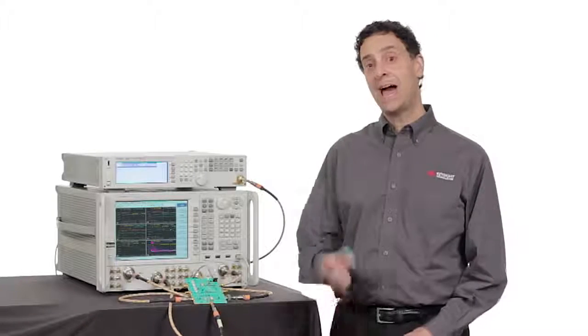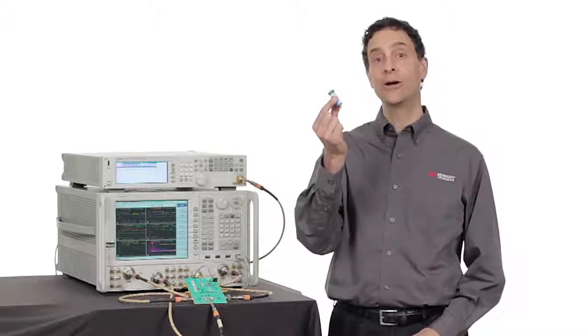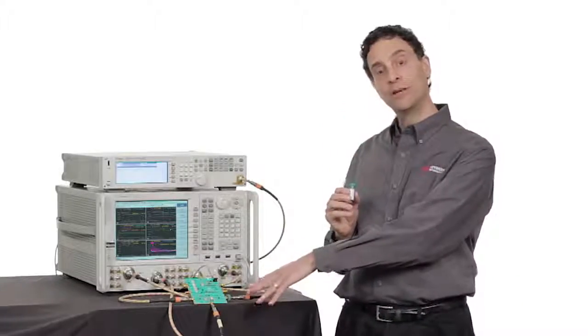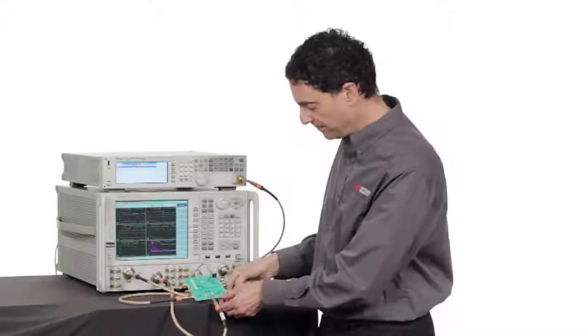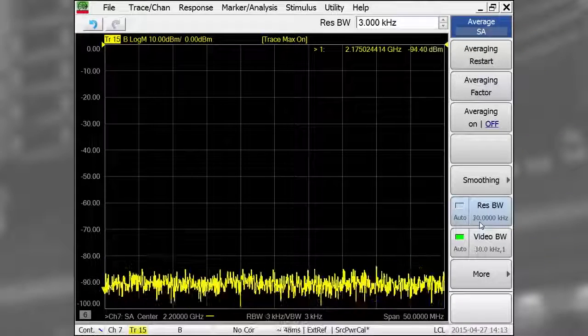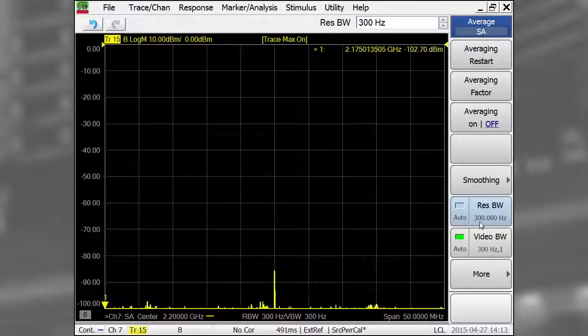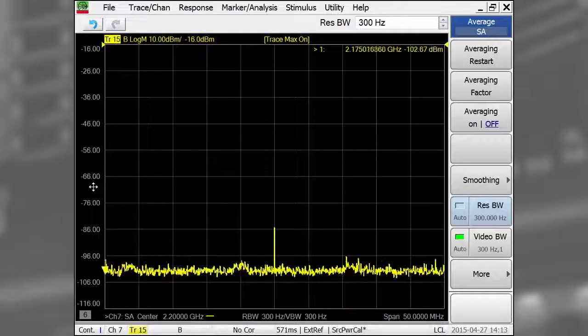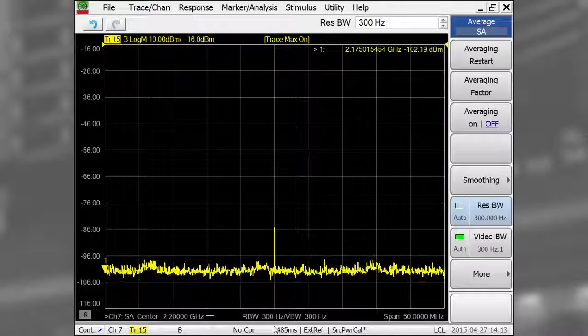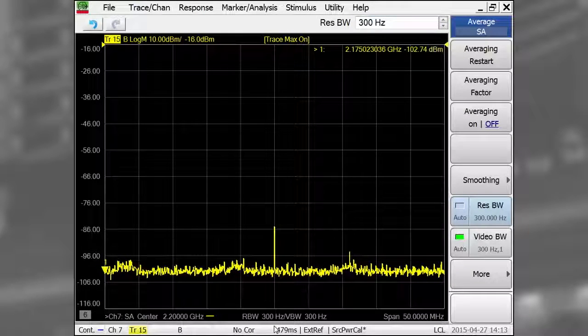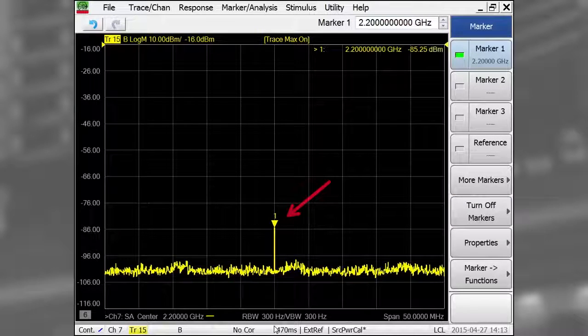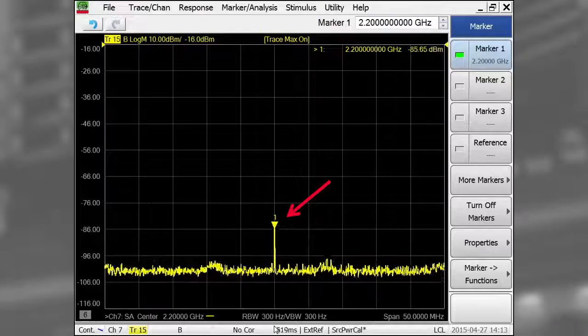I just happen to have a 1.2 GHz low-pass filter, which I'll add to the output of the converter. This filter does a great job of removing the spurious signals and allows me to make my noise figure measurements free of noise receiver compression. Zooming in with the spectrum analyzer, I see the LO feed-through has been knocked down to minus 85 dBm.